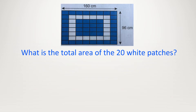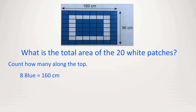The blanket on the right has been made from equally sized blue and white patches. What is the total area of the 20 white patches? It says 160 — that's the length. But how many blue rectangles are there? Just count it up. There are 8 blue rectangles going along, so 8 of them equals 160, meaning 1 of them is equal to 160 divided by 8 equals 20.